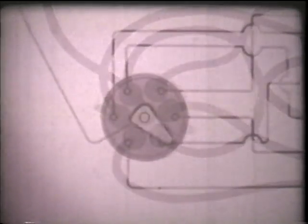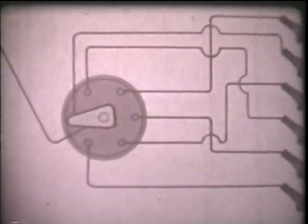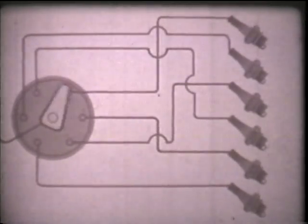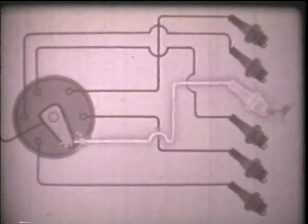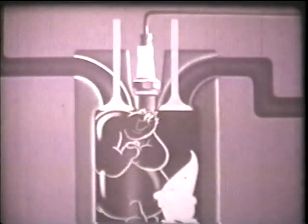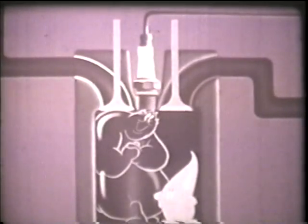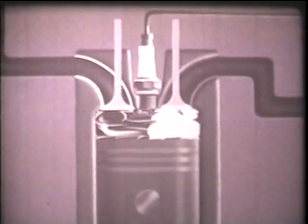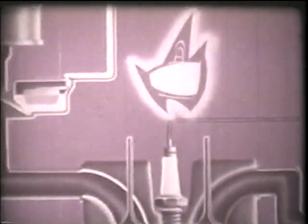The distributor is simply a revolving switch directing each spark impulse to the right spark plug at exactly the right instant. And as we know, the right instant is when the piston is almost at the top of its compression stroke and our mixture of fuel and air is squeezed to a small volume. Mr. Ignition is big league now. He touches off the mixture of fuel and air and we have the tremendous power of internal combustion.